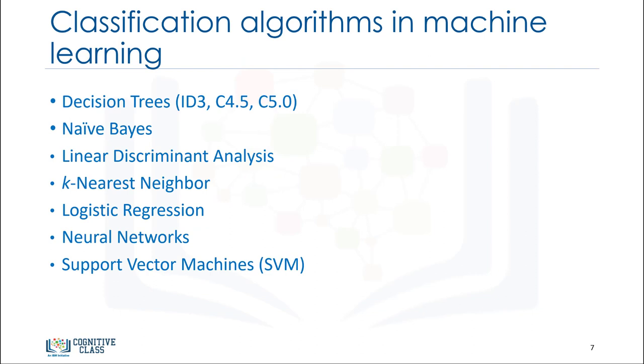Here are the types of classification algorithms in machine learning. They include decision trees, naive Bayes, linear discriminant analysis, k-nearest neighbor, logistic regression, neural networks, and support vector machines. There are many types of classification algorithms. We will only cover a few in this course.